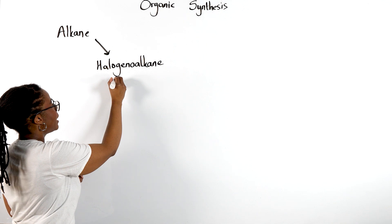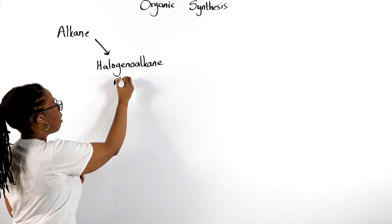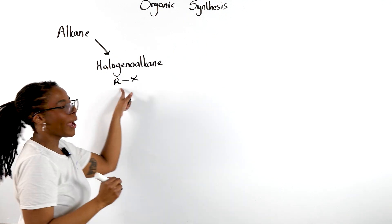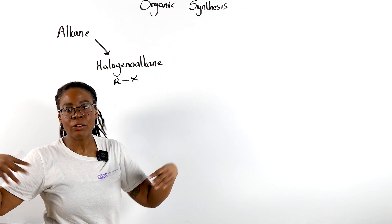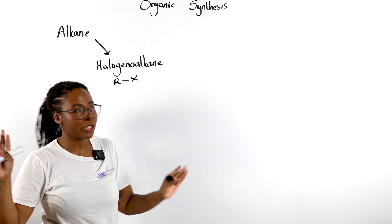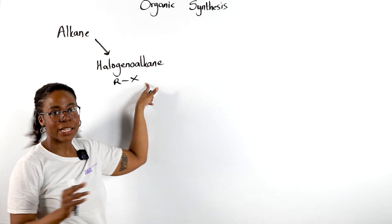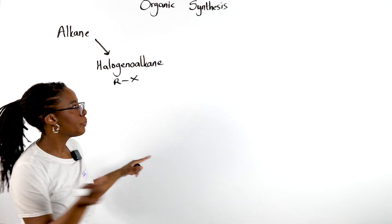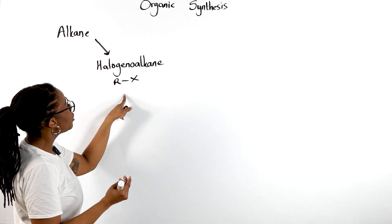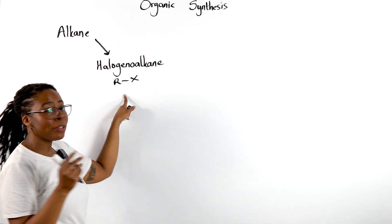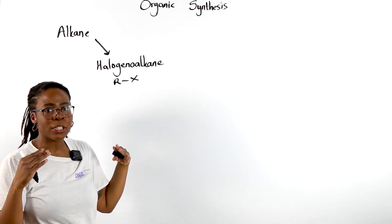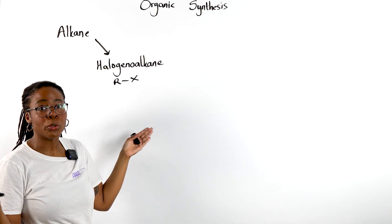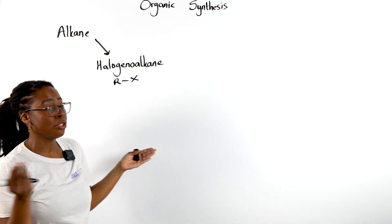I'm going to represent this as RX, where R is the alkyl group — the rest of the molecule — and X is your chloro, your bromo, or your iodo. Now, this halogenoalkane, we've got a few different options because we know halogenoalkanes undergo nucleophilic substitution.